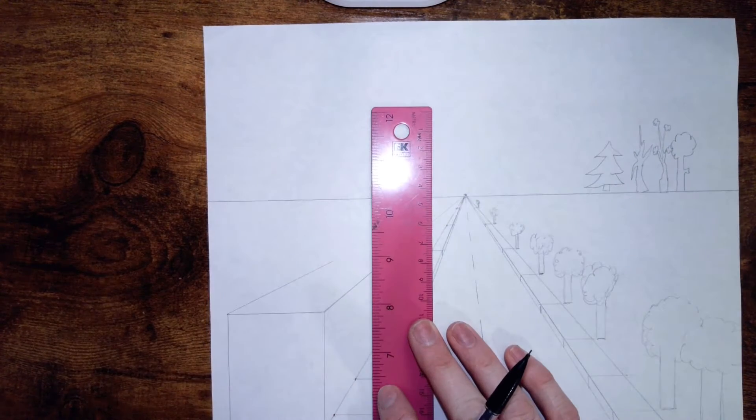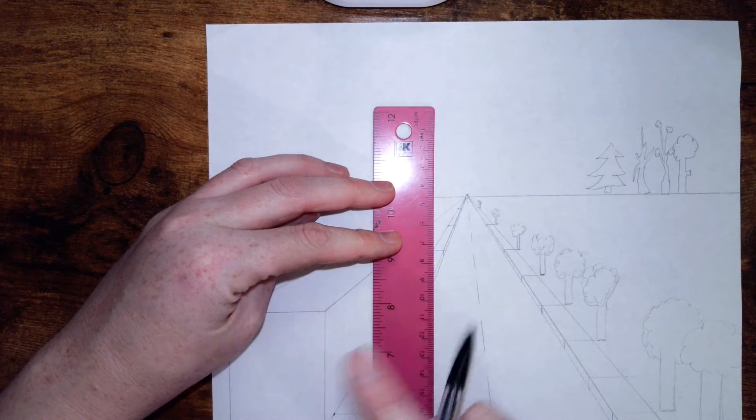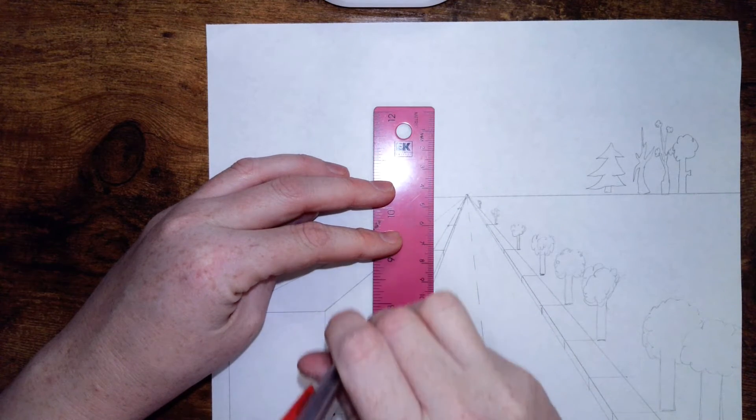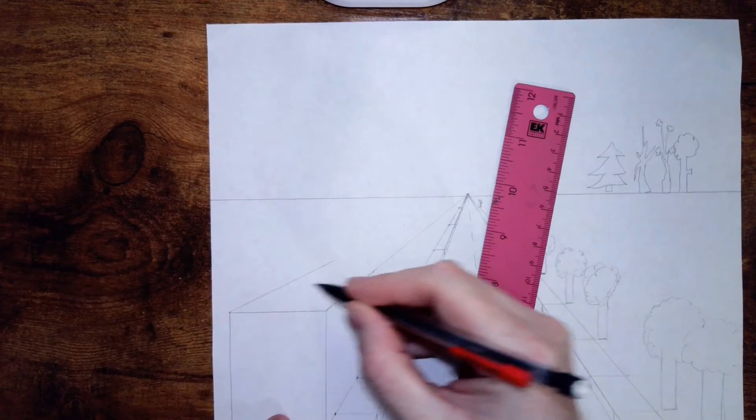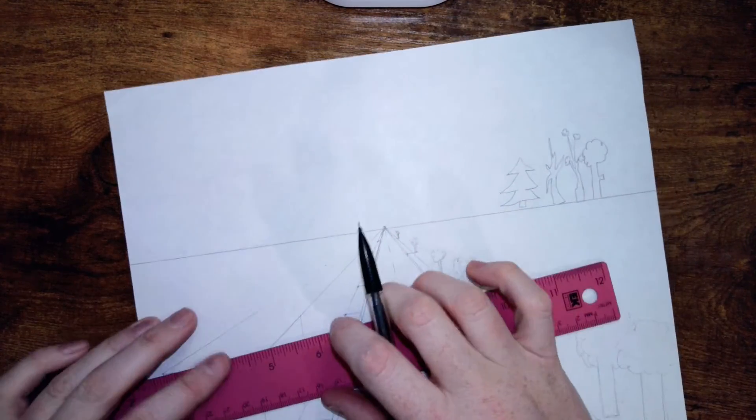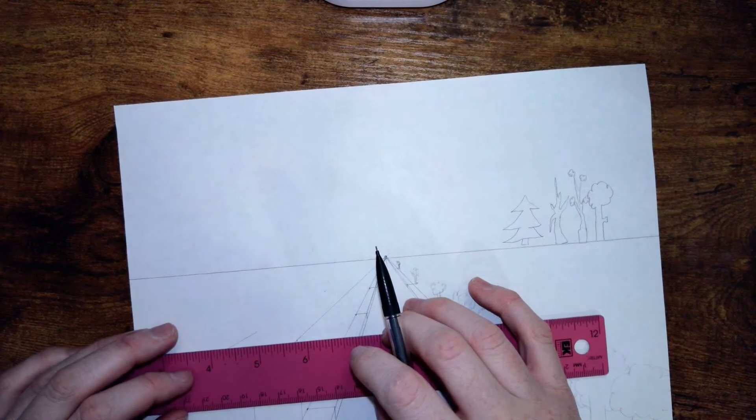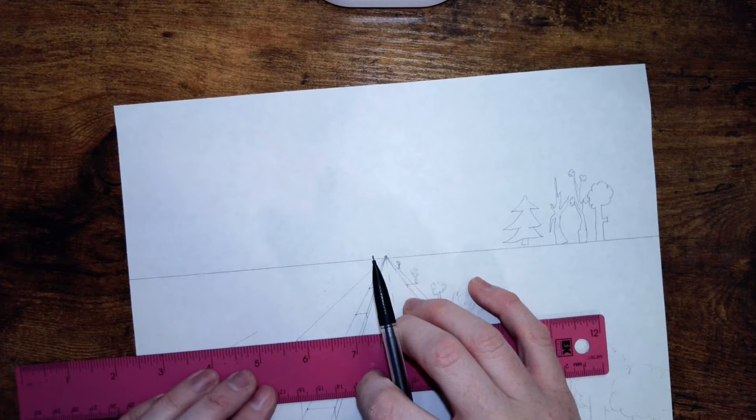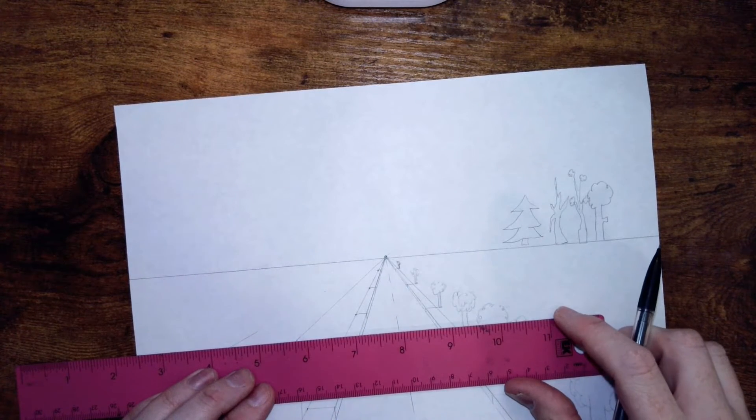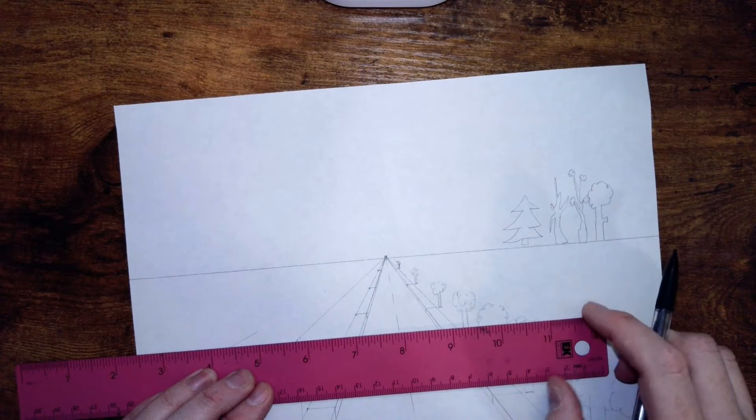All right, now I'm going to decide where I want my building to end. I'm going to say about here, making sure it's parallel to the other side of the building. Then where these two meet, draw lines straight across that's horizontal. Do not just draw a line and connect them.